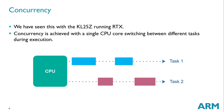So what is concurrency? We have seen this with the KL25Z running RTX. Concurrency is achieved with a single CPU core switching between different tasks during execution. I have a single CPU core and I constantly do the context switching between Task 1 and Task 2. We have seen this happening with RTX running on the KL25Z.